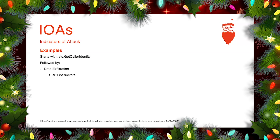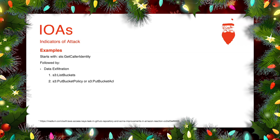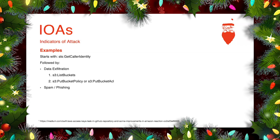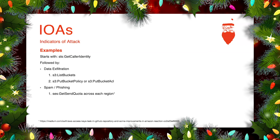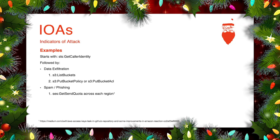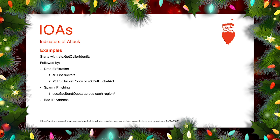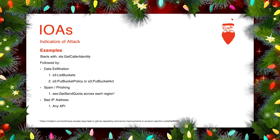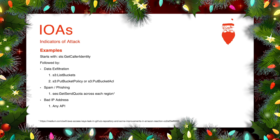Following that, a data exfiltration attempt might look like S3 ListBuckets — they list out the buckets in the account — then use PutBucketPolicy or PutBucketACL to make a bucket public and steal data. It could also be followed by a spam or phishing attack through Simple Email Service: you might see SES GetSendQuota across each region to identify regions outside the SES sandbox, meaning they can send mass emails. Another example is an API call coming from a malicious IP address, which is definitely an indicator something suspicious is going on.